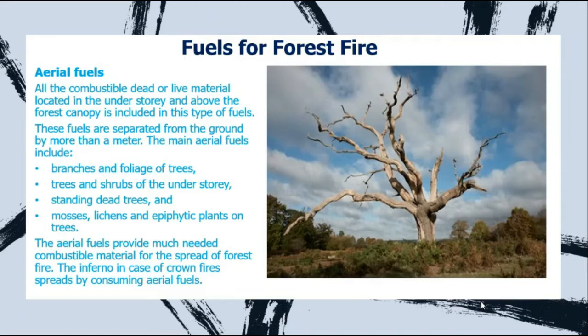Another type is aerial fuels — combustible dead or live material located in the upper story of the forest, consisting of dead plants, branch foliage, dead logs, lichens, and mosses growing on tree trunks. Aerial fuels lead to crown fires that spread from the crown of one tree to another, which is a very uncontrollable kind of forest fire.